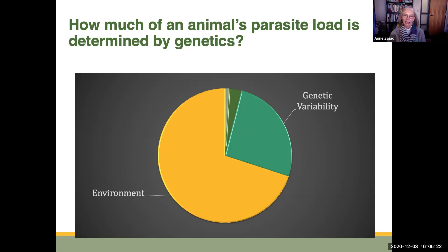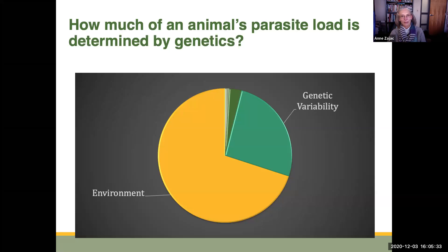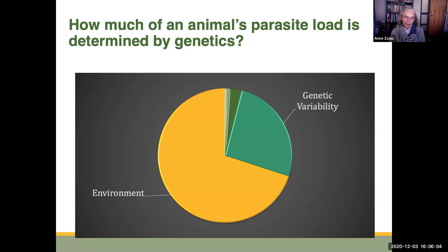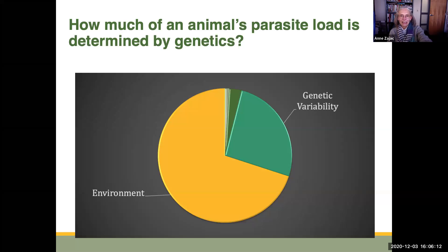If we ask how much of an animal's parasite load is determined by genetics, what we get is something like a big pie where the bulk — about 70 to 80% — is really related to things that are not intrinsic to the animal itself: environmental factors like how many parasites are out there, conditions affecting the animal, stress reducing the immune response, poor nutrition reducing the immune response, or lack of adequate shelter. All these things that affect susceptibility temporarily, determined by environment or age, fall into this huge non-genetic portion of the pie.